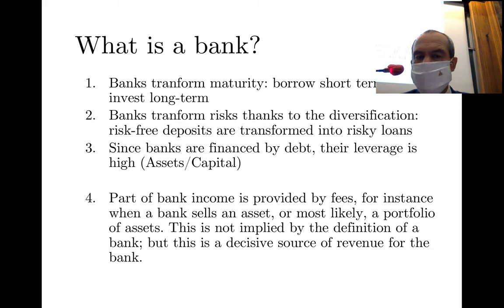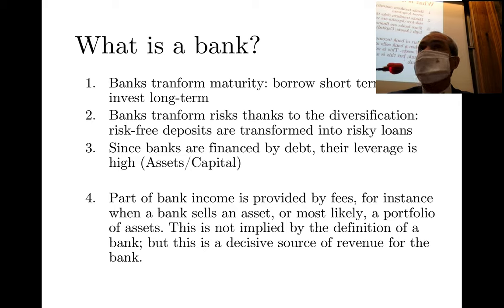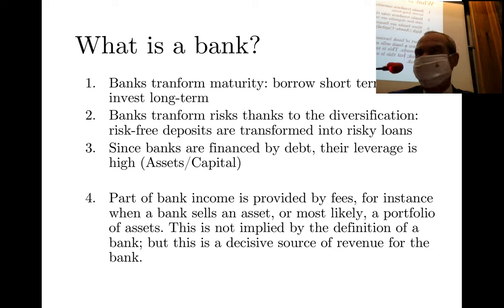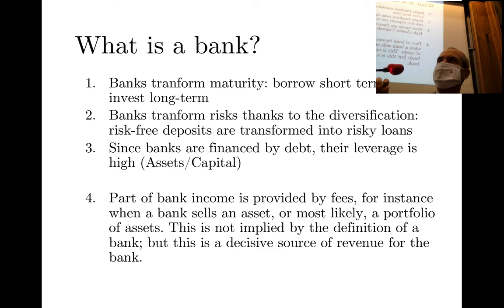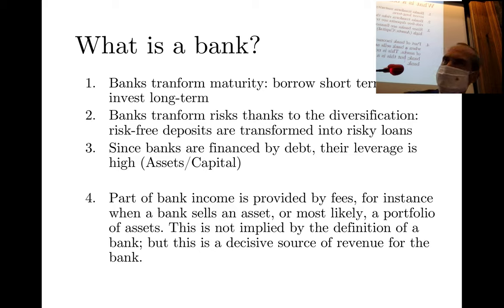Part of banking income is derived from fees — for advice, payment services, or other services. American banks since the 1960s have been originating and distributing: they grant credit and then securitize it to get it off their balance sheet, so it no longer requires capital, allowing them to lend anew.